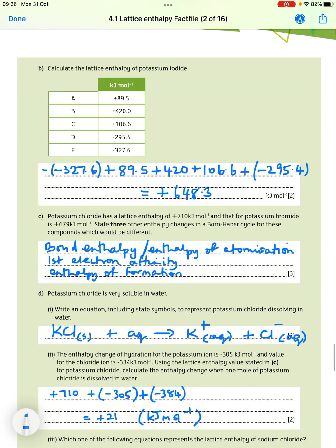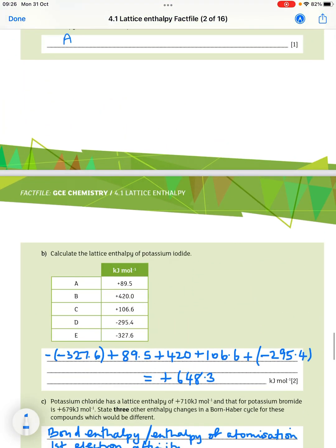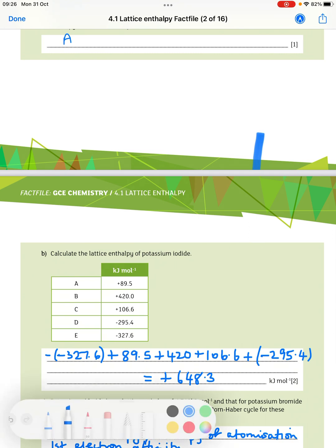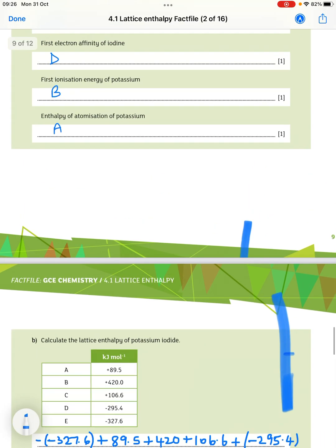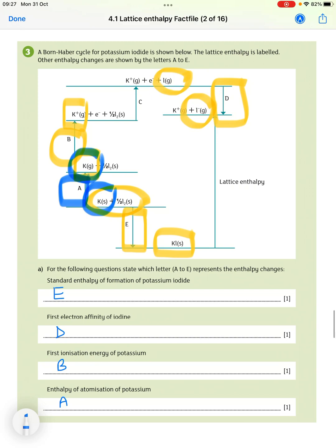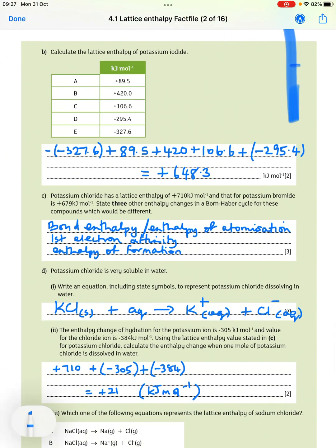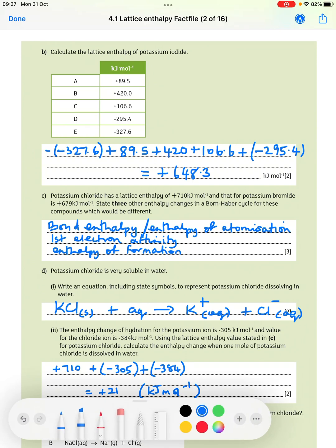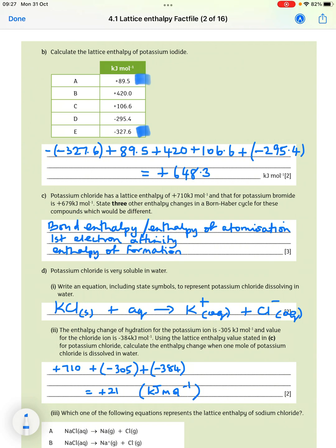Then calculate the lattice enthalpy of potassium iodide. So we're just putting in all of the values and changing the signs accordingly. What I've got is minus 327.6, plus 89.5, plus 420, plus 106.6, minus 295.4. And that gives 648.3 kilojoules per mole.